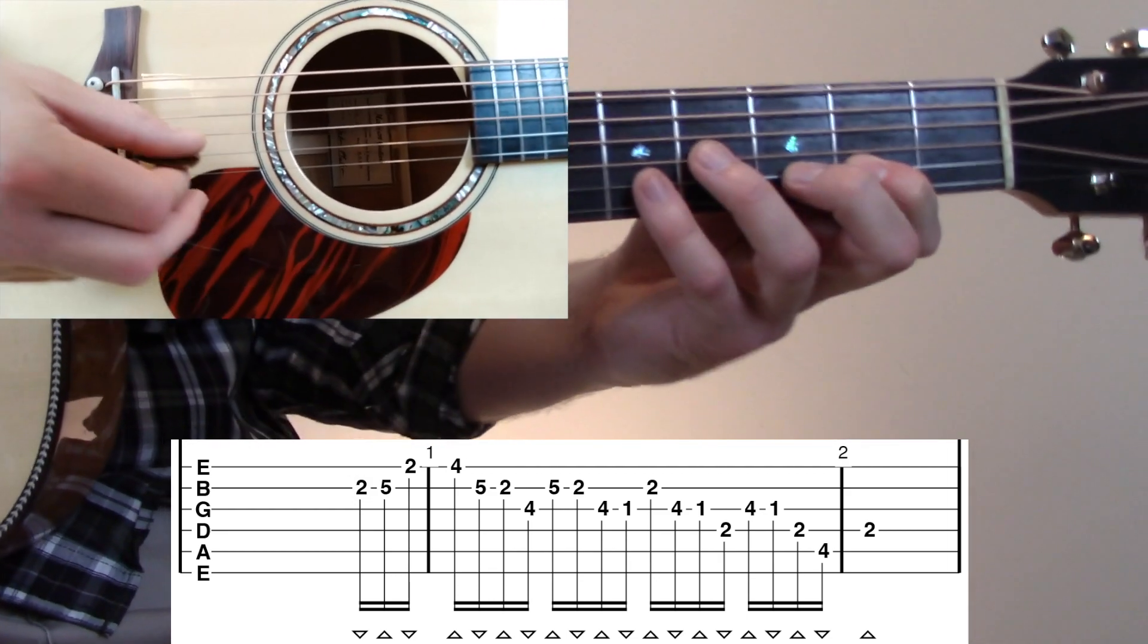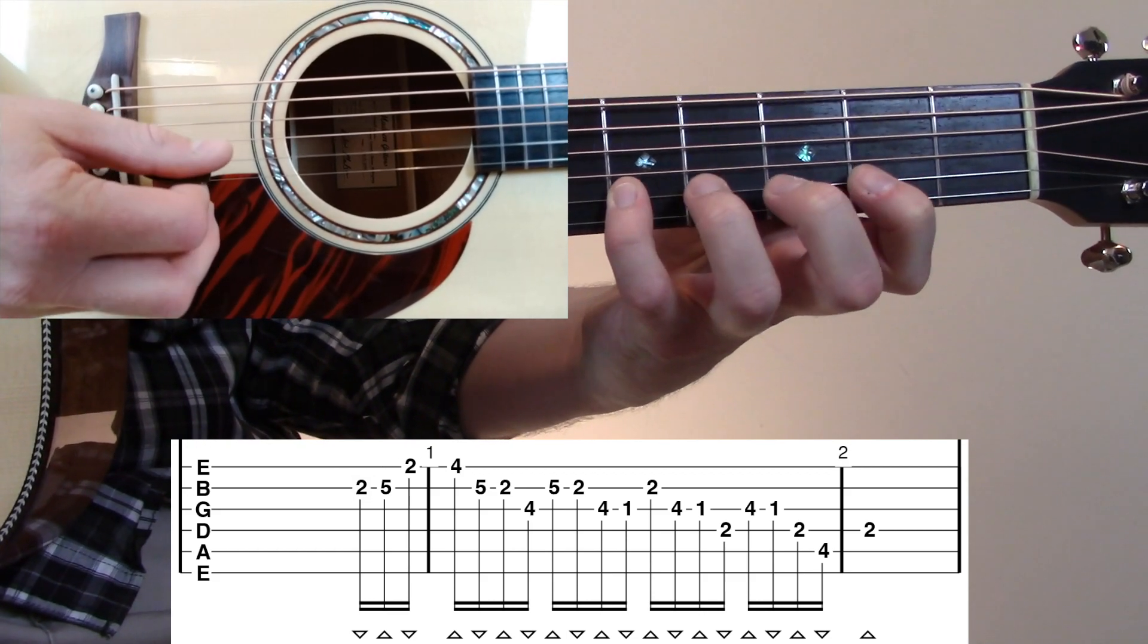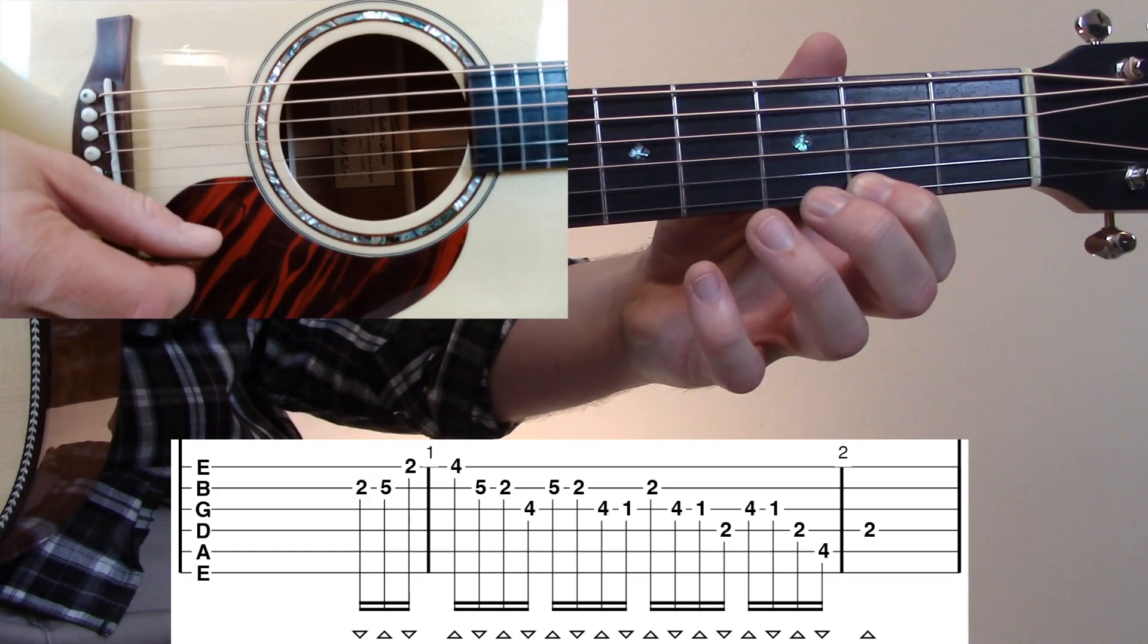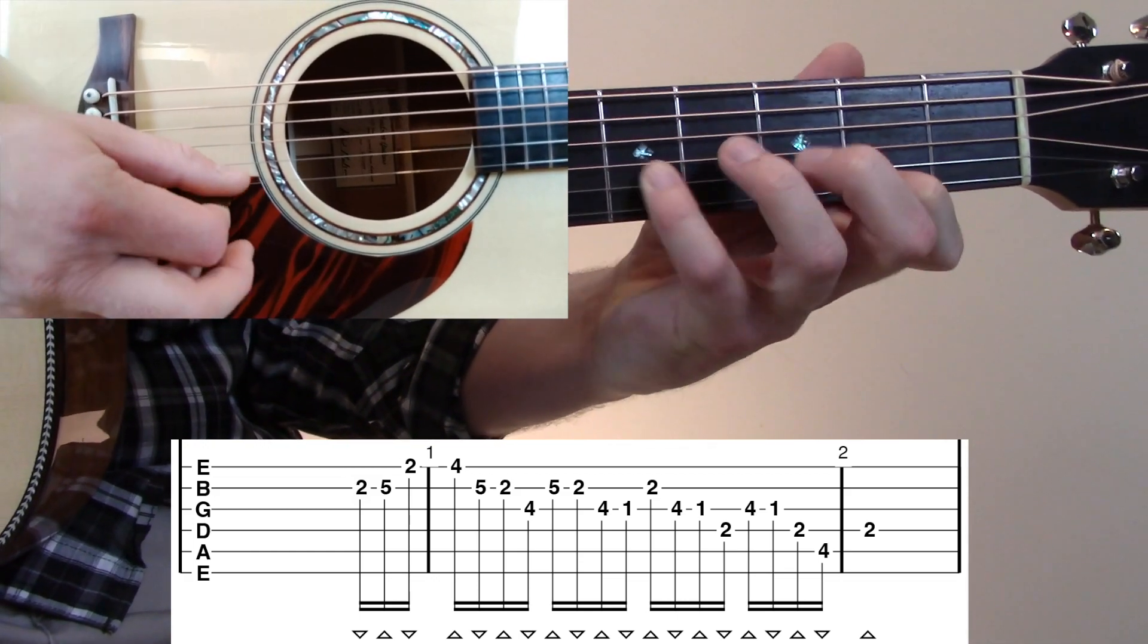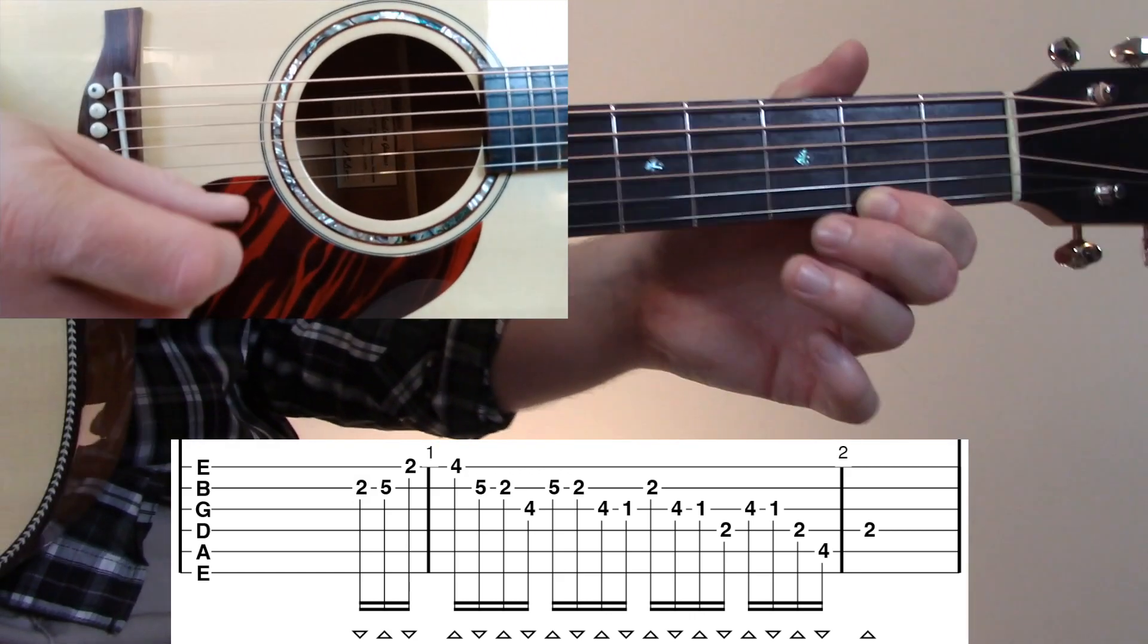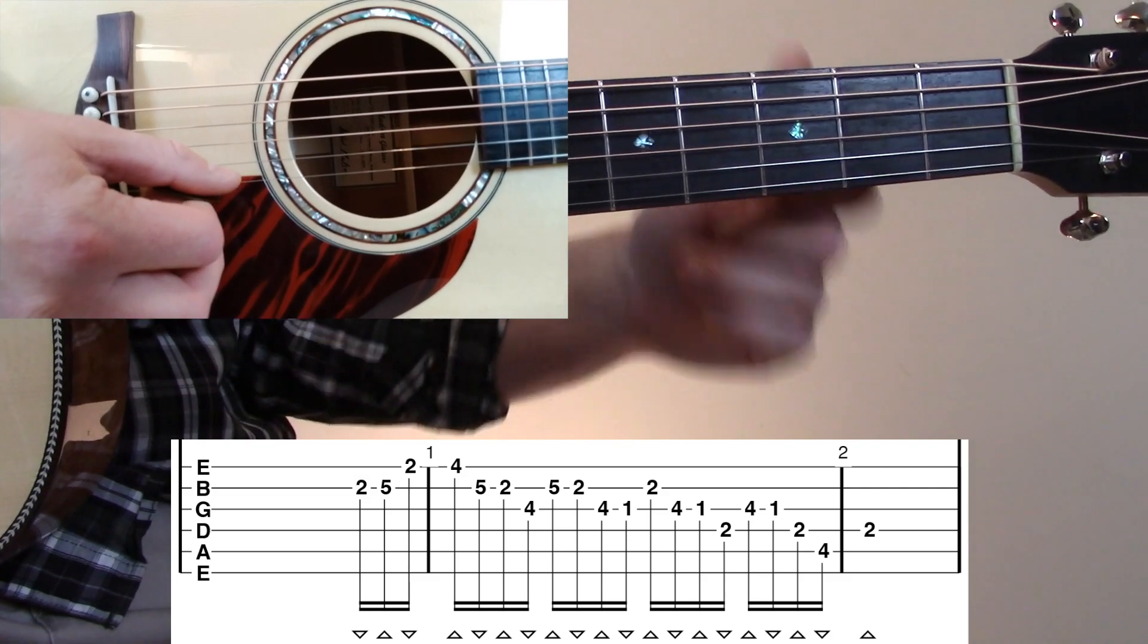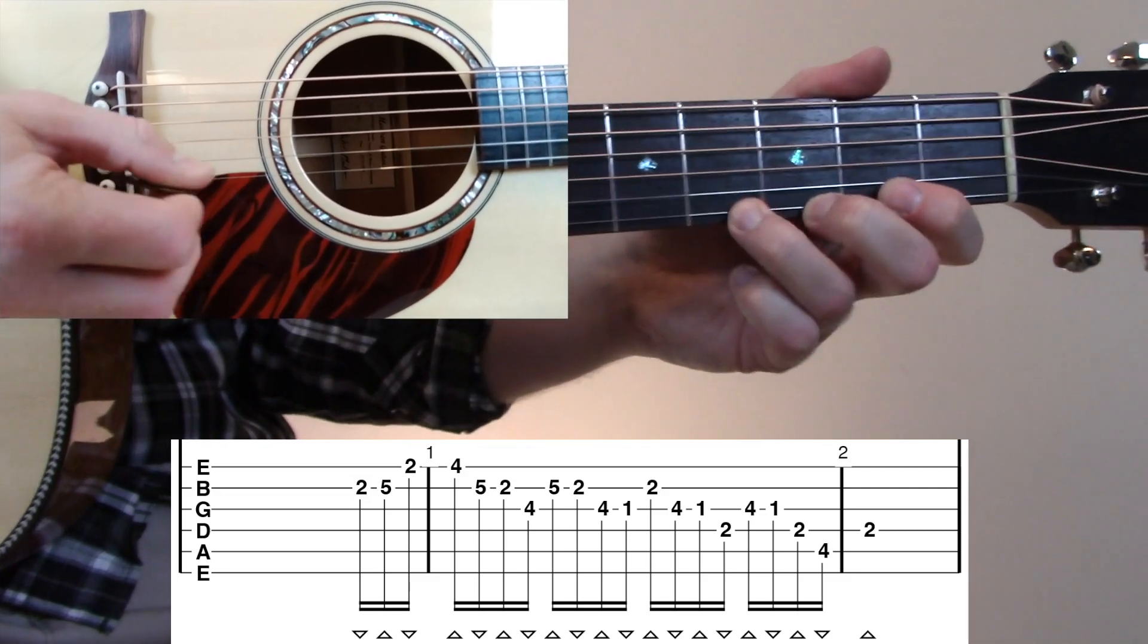The first three notes of this pickup are going to be 2nd fret B, 5th fret B, and then 2nd fret high E. That's going to be our three-note pickup. Then at the beginning of measure one, we have 4th fret high E, and that's going to be the one count or the downbeat of the first measure.